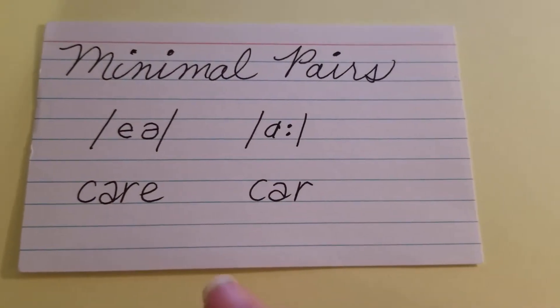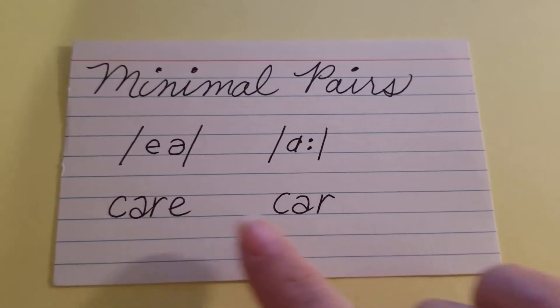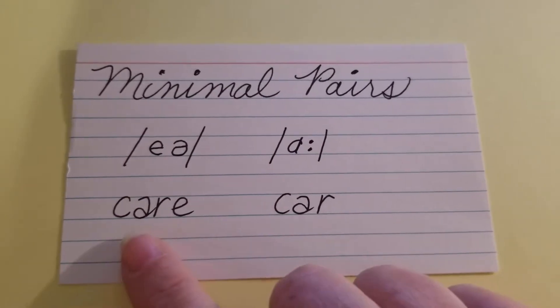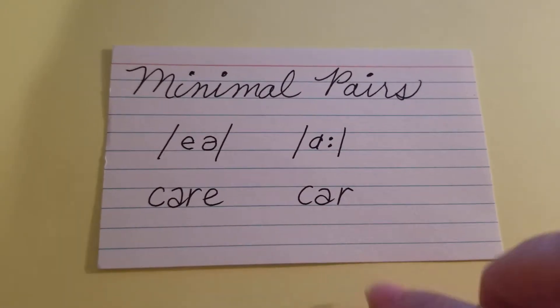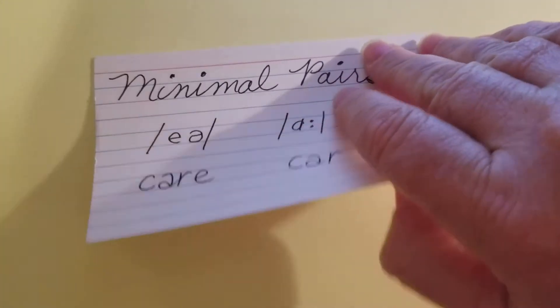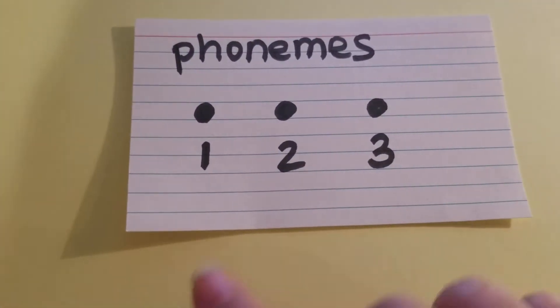Well, now let's continue with our minimal pairs of the A and the AH sound for care and car. So we're going to look at A and AH. Here are our phoneme numbers. Let's begin.